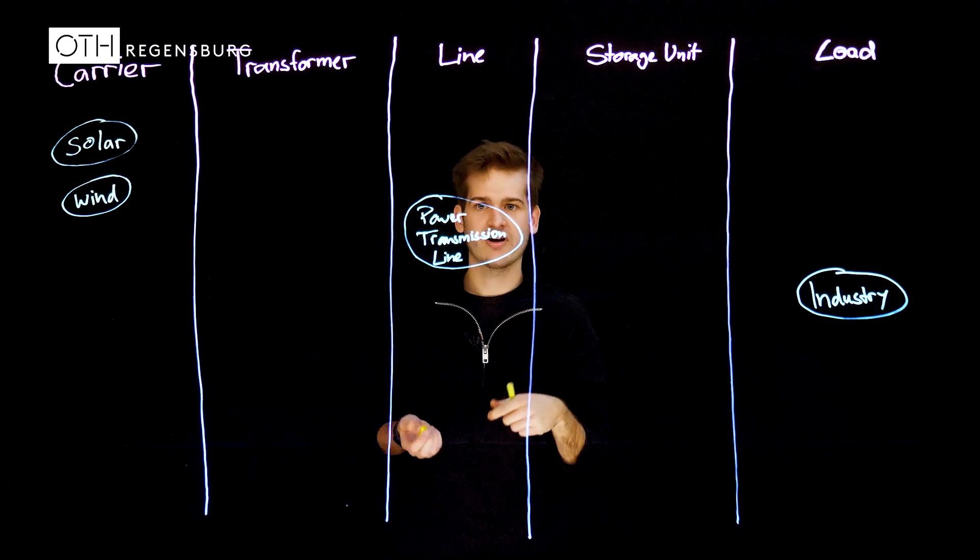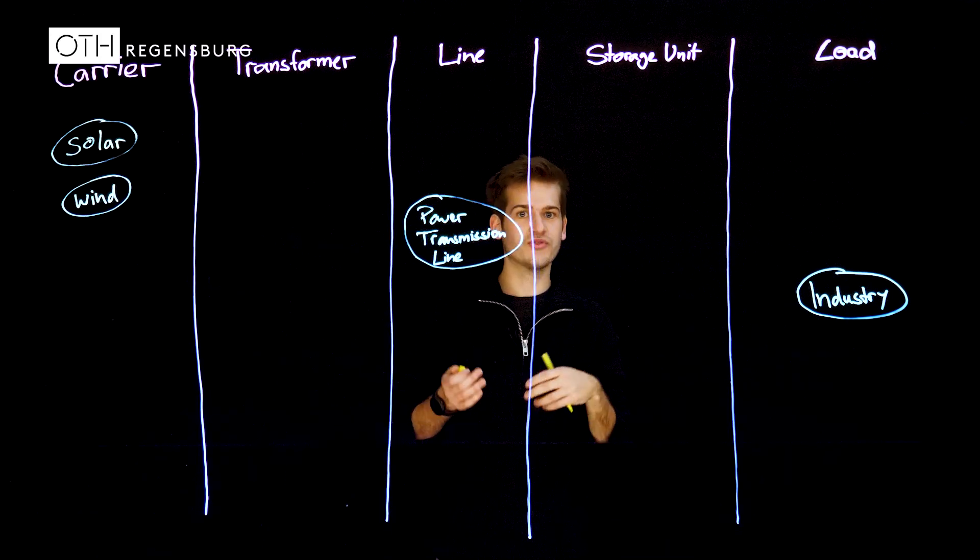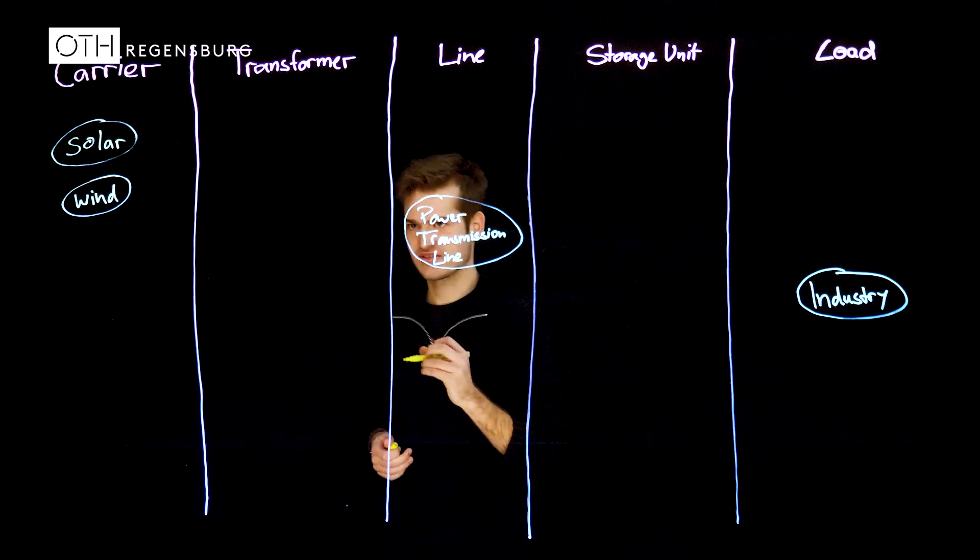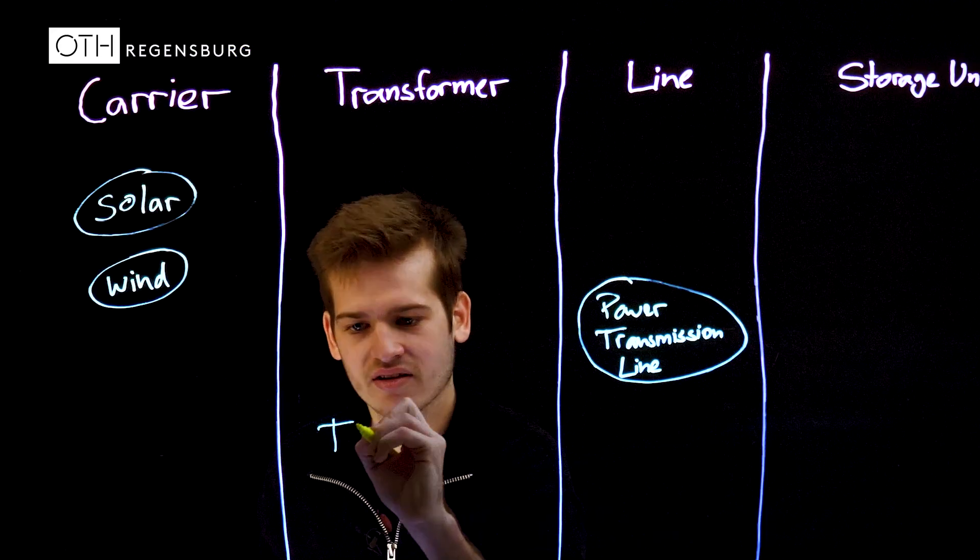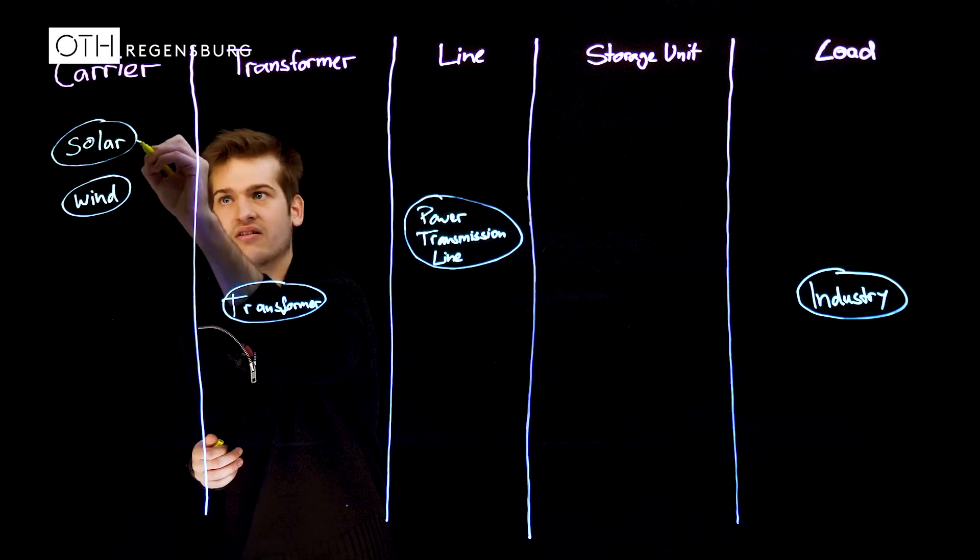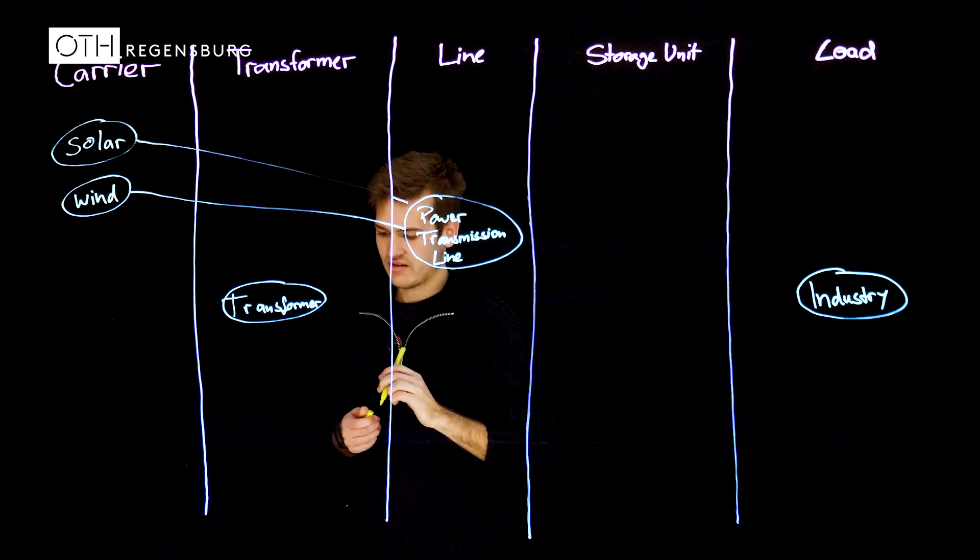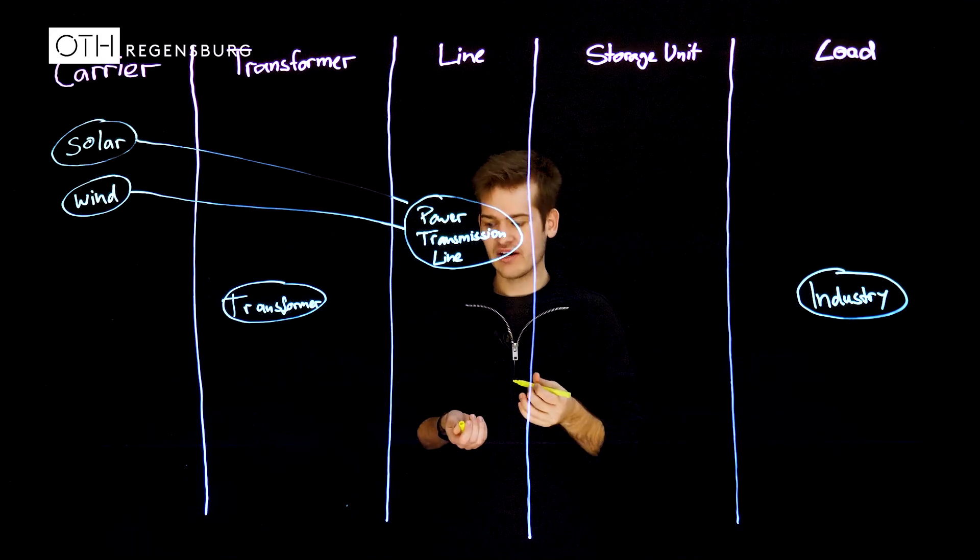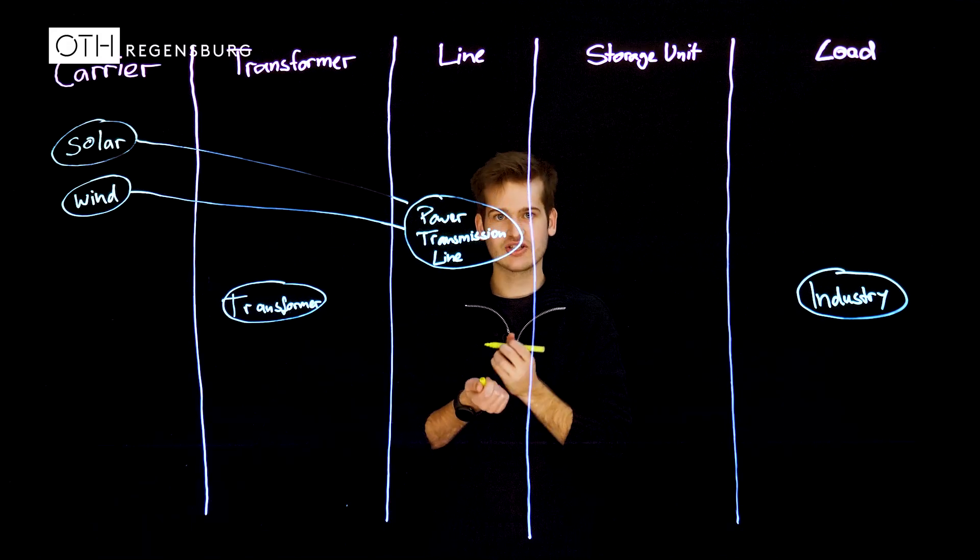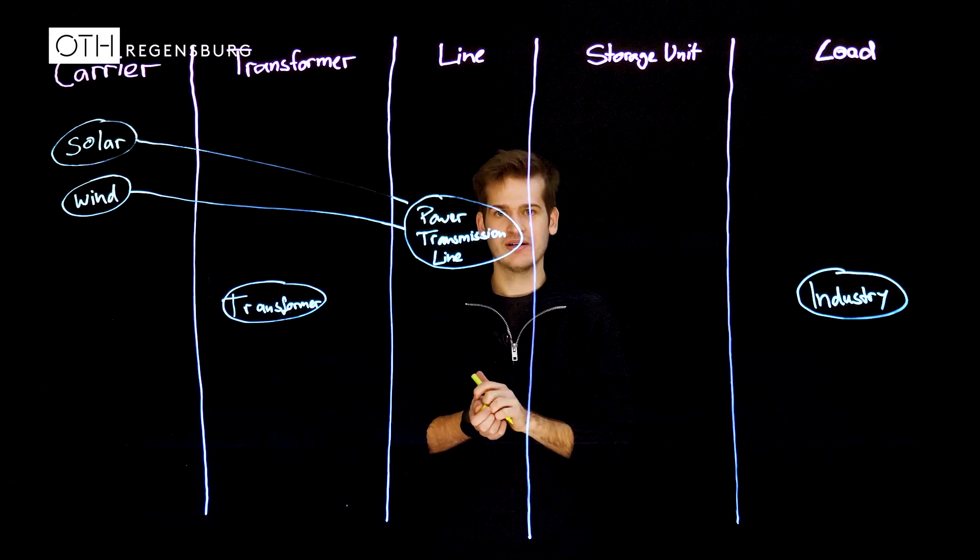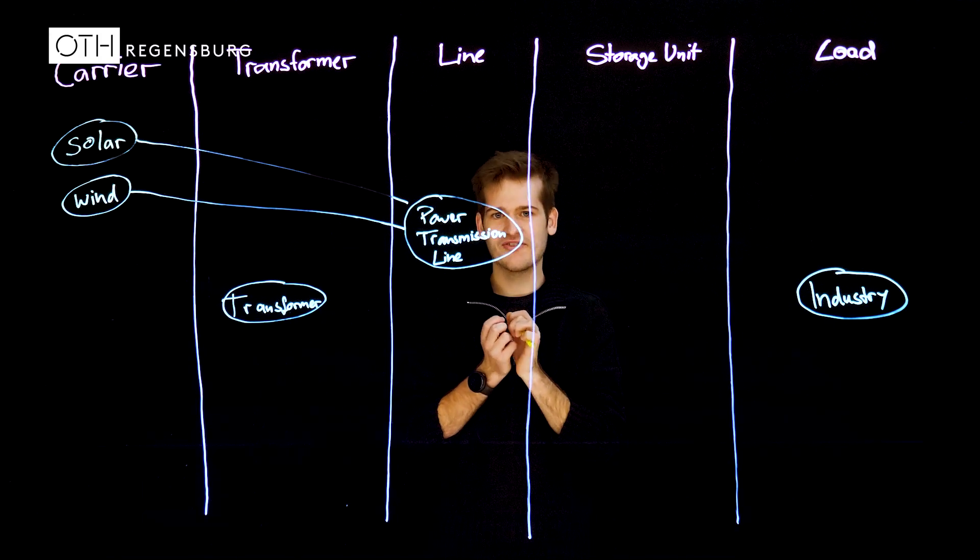For connecting two components with different voltages we have transformers. Last but not least we have storage units. They can shift energy from one time to another subject to efficiency losses.